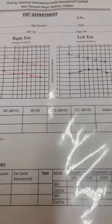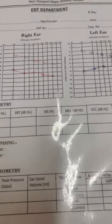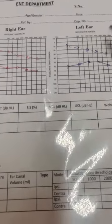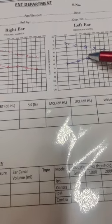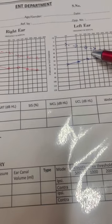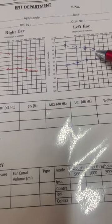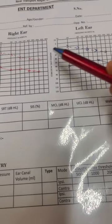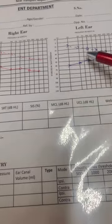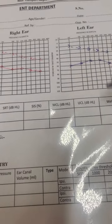This is another common audiogram where there is an air-bone gap as well as a dip in bone conduction, which is commonly called a mixed type of hearing loss.